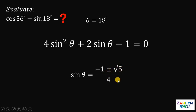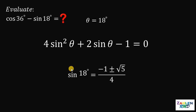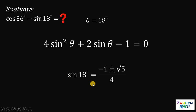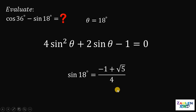Don't forget that theta is 18 degrees, which is positive, so we take the positive root. Therefore, the value of sine of 18 degrees equals negative 1 plus square root of 5, all over 4. Now we have the value of sine of 18 degrees.